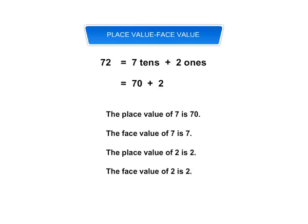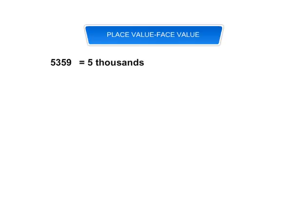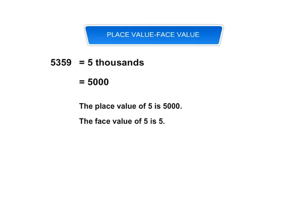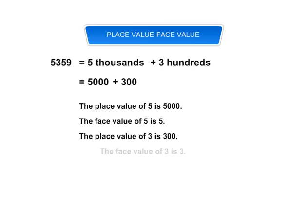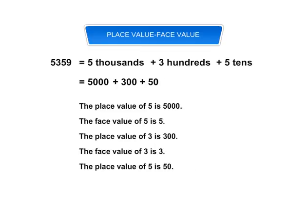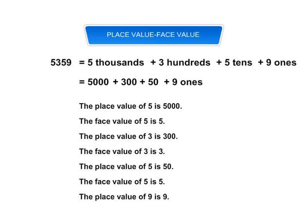Take a 4-digit number example: 5,359. The digit 5 is at the thousands place, so the place value of 5 is 5,000 and the face value is 5. The digit 3 is at the hundreds place, so the place value of 3 is 300 and the face value is 3. The digit 5 is at the tens place, so the place value of 5 is 50 and the face value is 5. The digit 9 is at the ones place, so the place value of 9 is 9 and the face value is also 9.